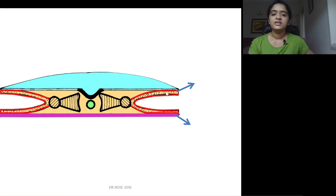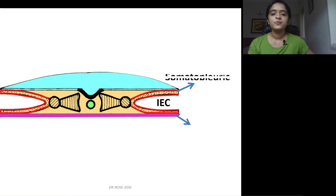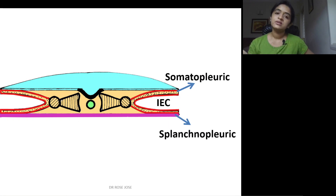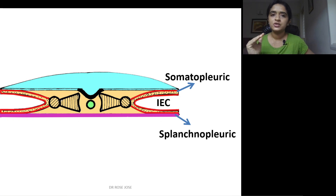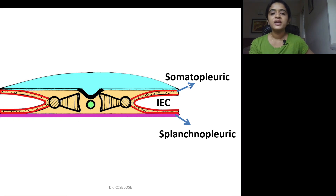The lateral plate mesoderm differentiates into somatopleuric and splanchnopleuric intra-embryonic mesoderm. Just as the extra-embryonic mesoderm had a cavity called the extra-embryonic coelom with somatopleuric and splanchnopleuric divisions, in the intra-embryonic mesoderm a cavity forms called the intra-embryonic coelom, which differentiates the lateral plate mesoderm into those two layers.